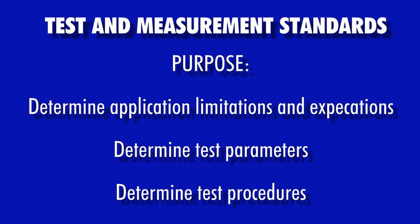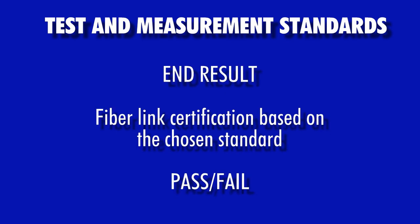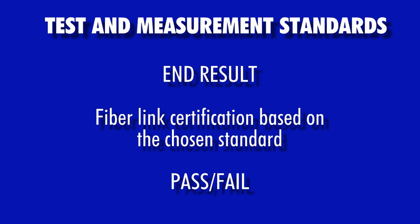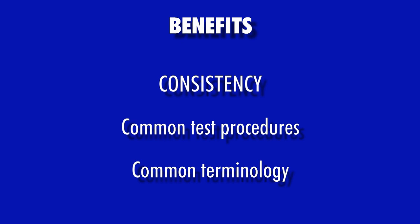The main purpose of fiber optic cabling standards is to determine network limitations and expectations of the application, determine test parameters that accommodate limitations and expectations of the application, and to determine proper test procedures to use. The end result is the ability to develop an optical link budget used to certify a fiber link against the requirements of the application for which the standard was written. In other words, certifying a fiber link determines whether or not the link will pass or fail against the chosen standard.